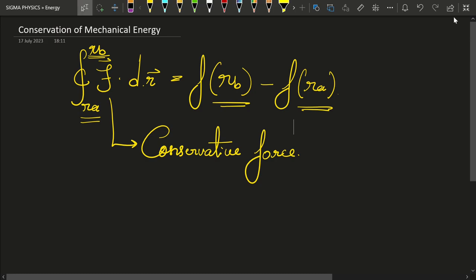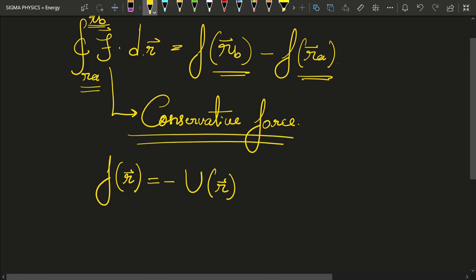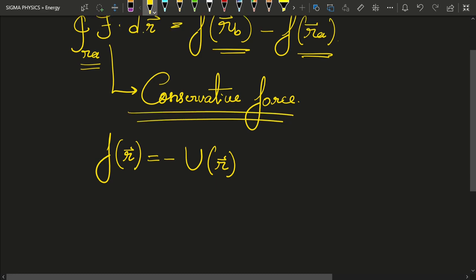And in fact, let us call these functions F of R equal to, now these are vectors, they are going to depend upon the position vectors. So let us define F of R equal to minus U of R for historical reasons. Then this equation for the conservative force will look something like this.